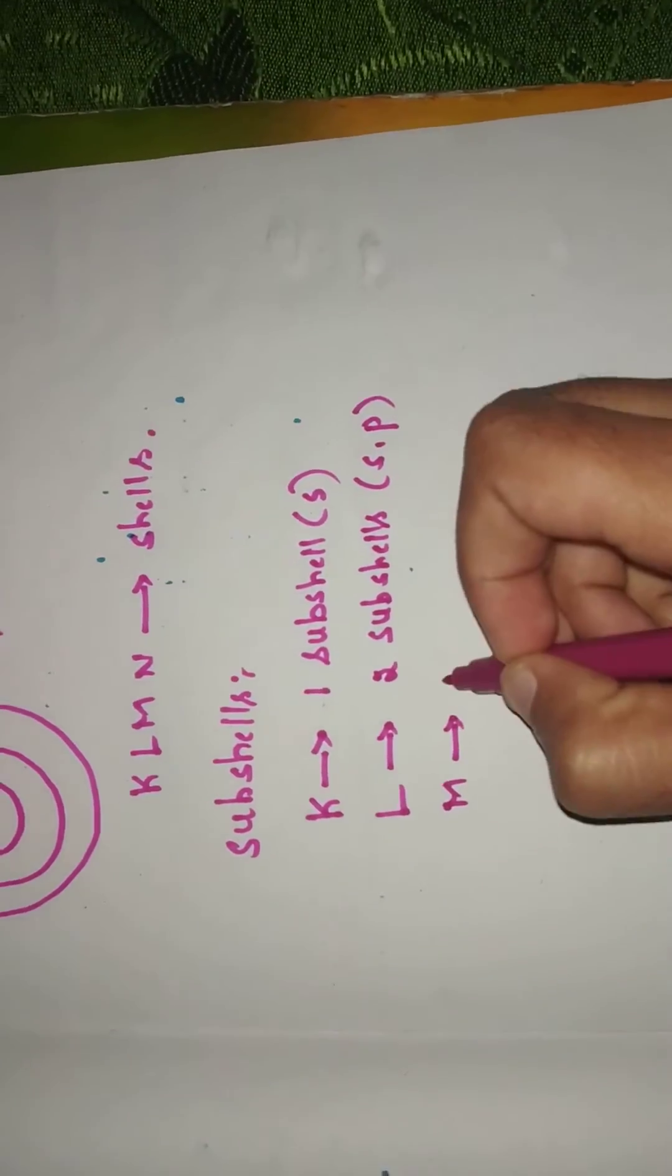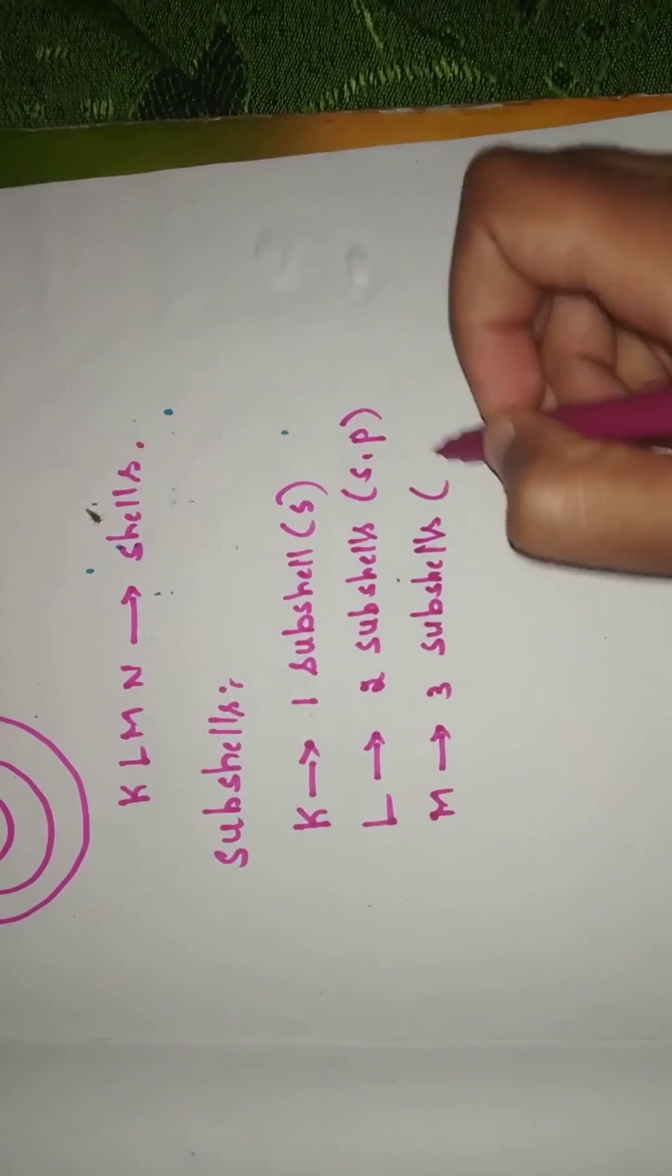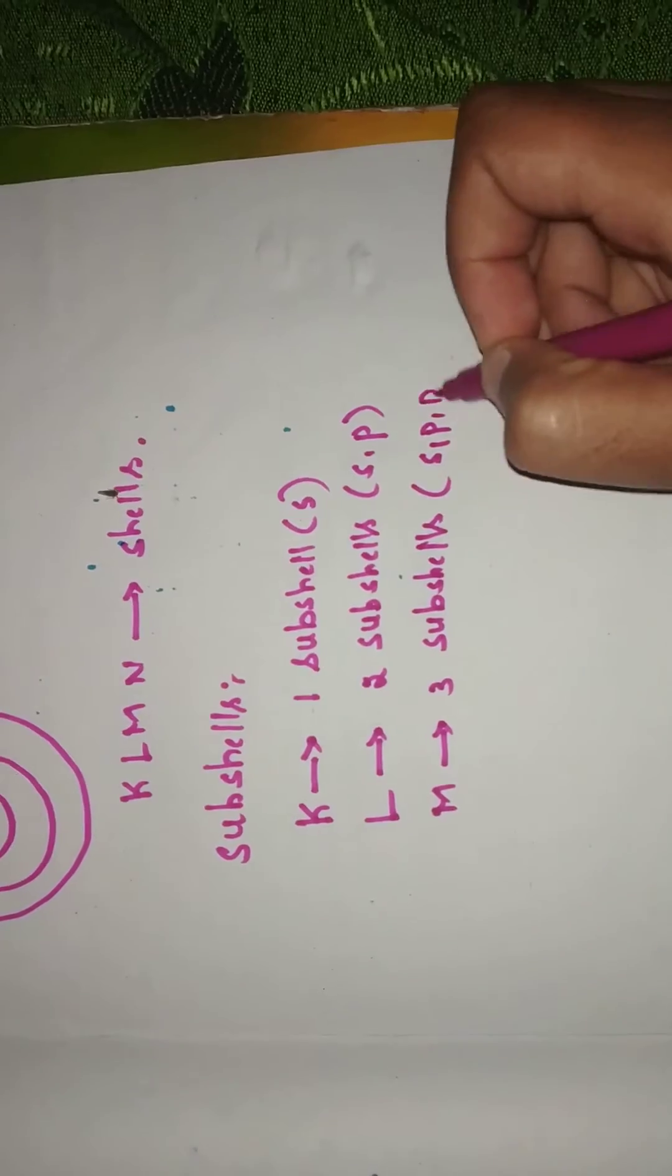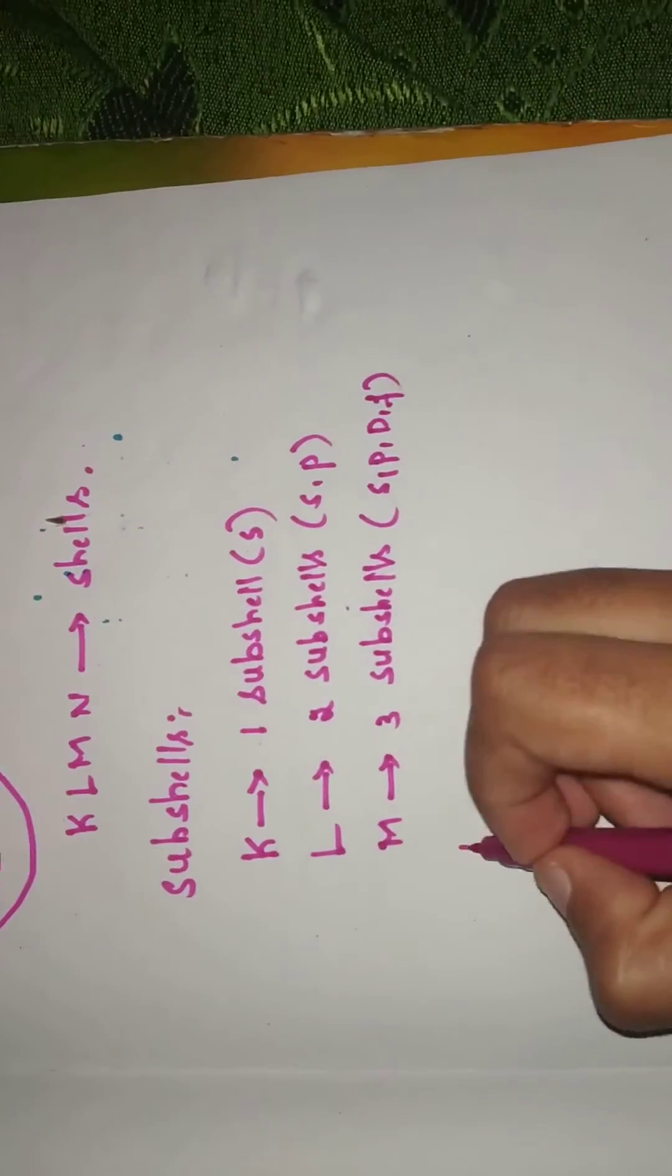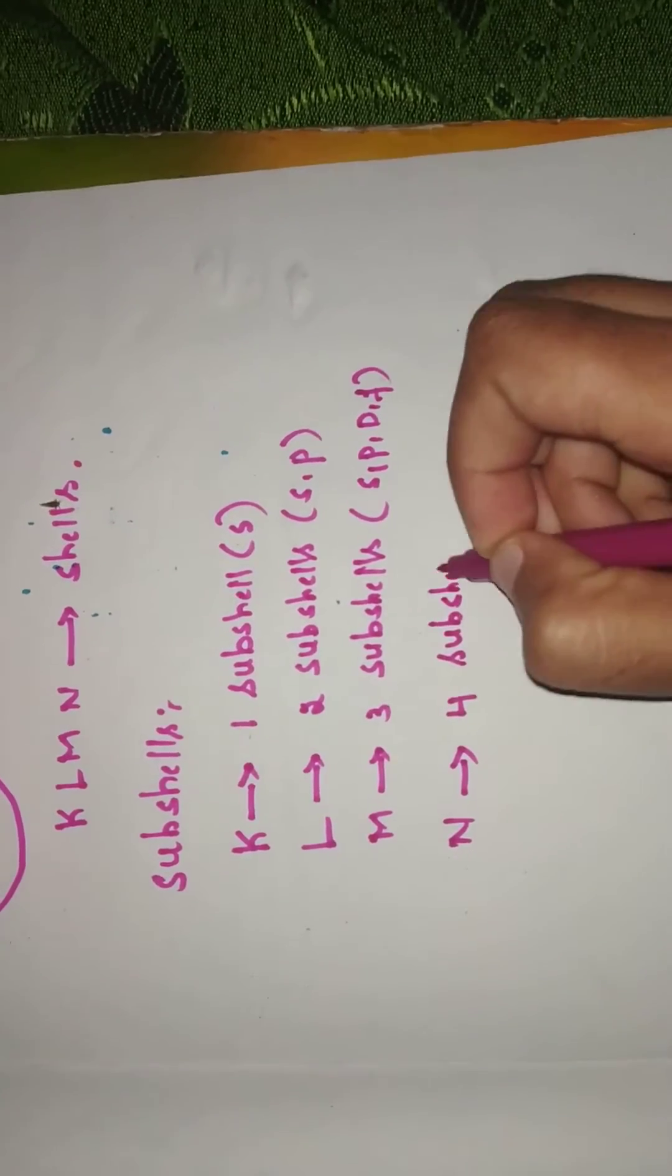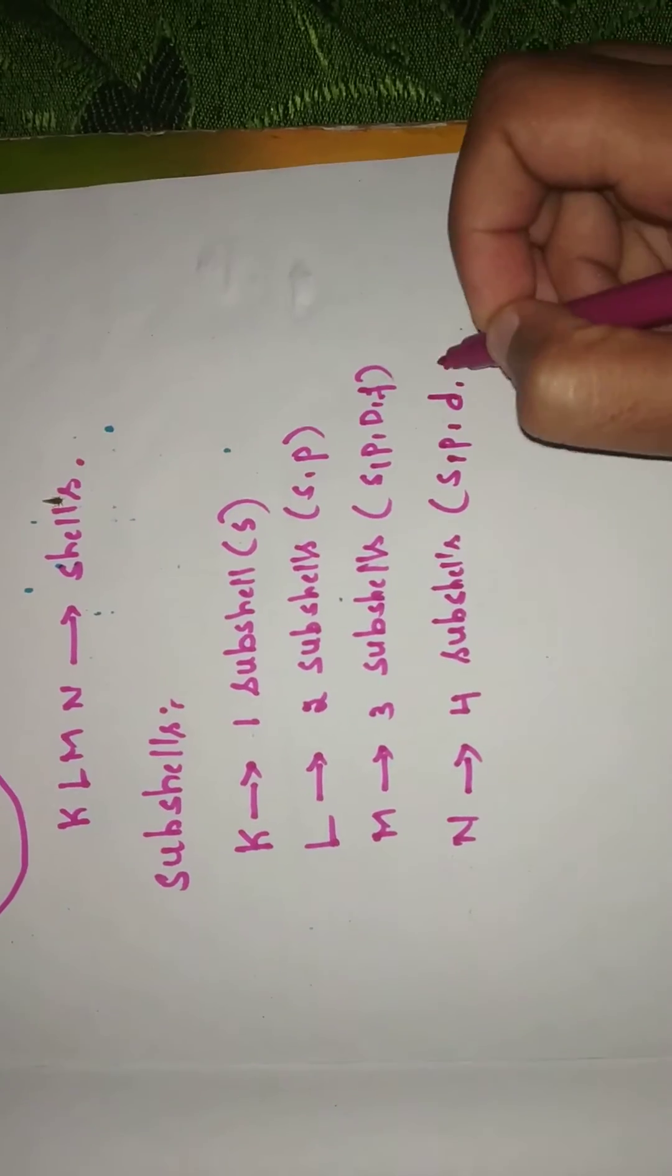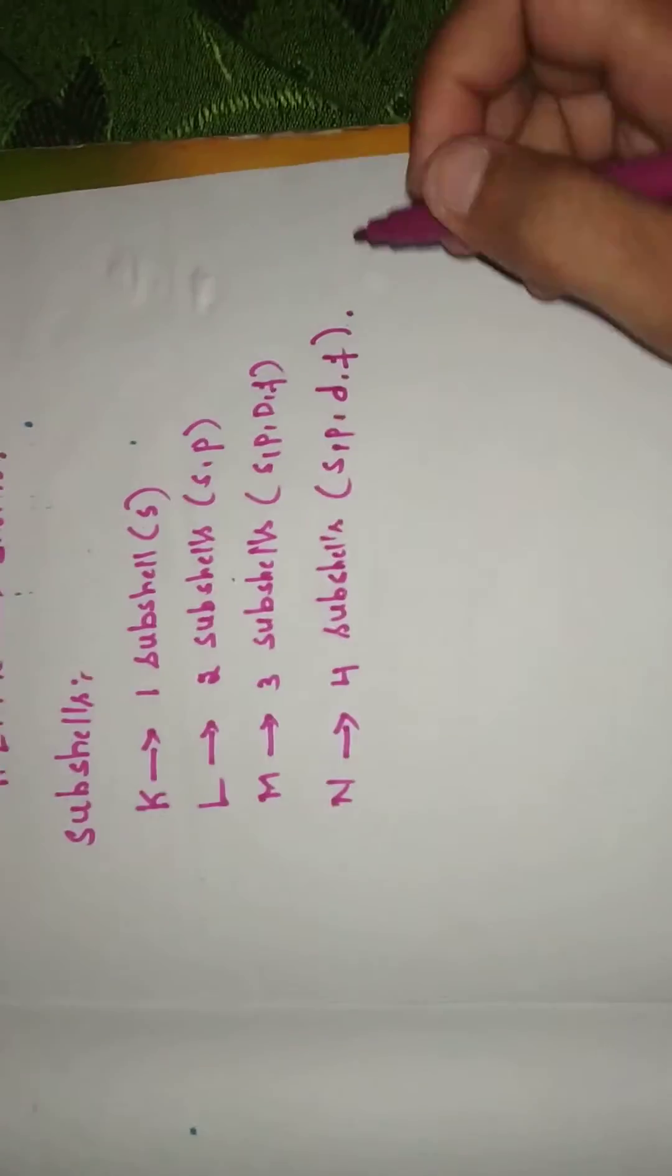M shell consists of three subshells: S, P, and D. N shell consists of four subshells: S, P, D, and F.